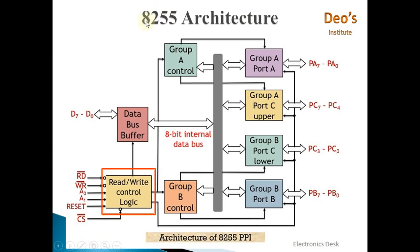CS bar must be low to enable 8255. Then we have the RD bar pin and WR bar pin. Zero on the RD bar pin indicates that 8255 will perform a read operation, and zero on the WR bar pin indicates it will perform a write operation — so it will be either read or write.